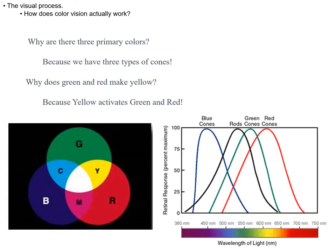So now we can answer our first question: why are there three primary colors? That's because we have three types of cones — there are only three colors to be mixed.